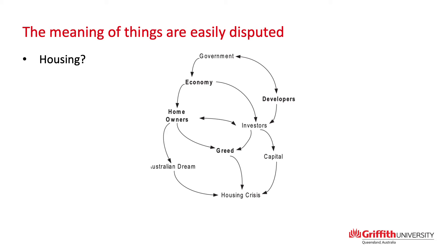When we were mapping this problem, we looked at the government's relationship to developers and the economy. Developers are powered by investors who want capital and returns. One argument — from an article I found in a magazine — was that one driver for the housing crisis could possibly be greed. But when you explore the problem, that's just one concept. You could replace it with the concept of wealth building or the concept of safety, and by using these concepts you can begin to unpack the meaning of the problem and understand its boundaries.